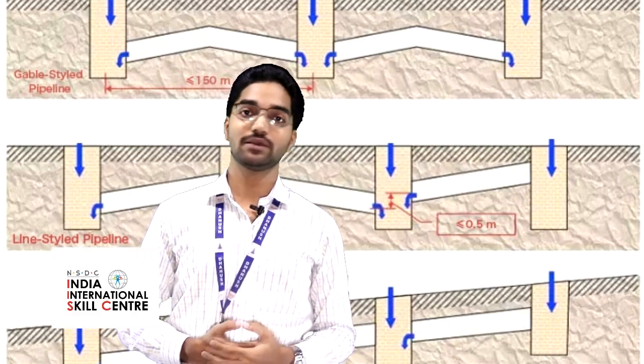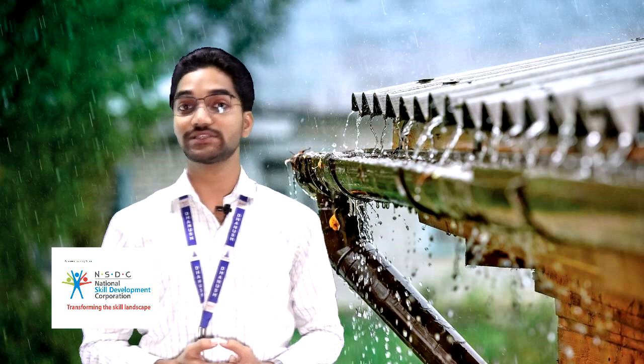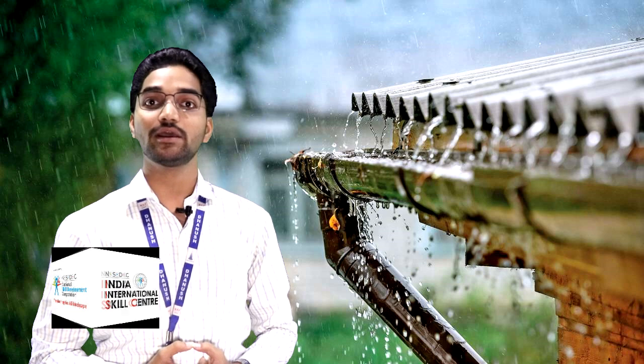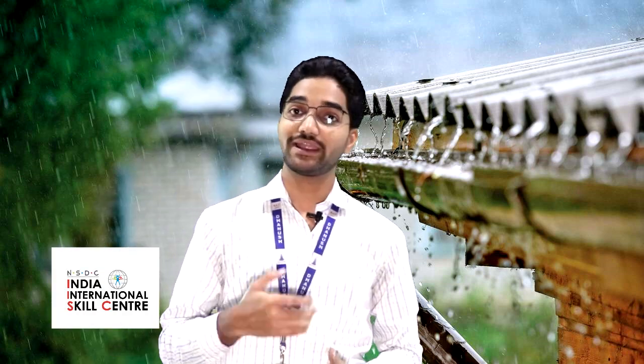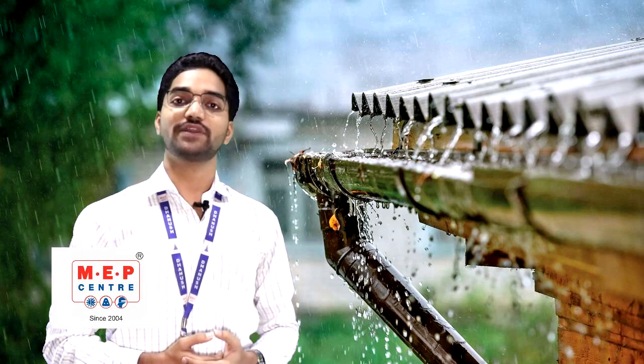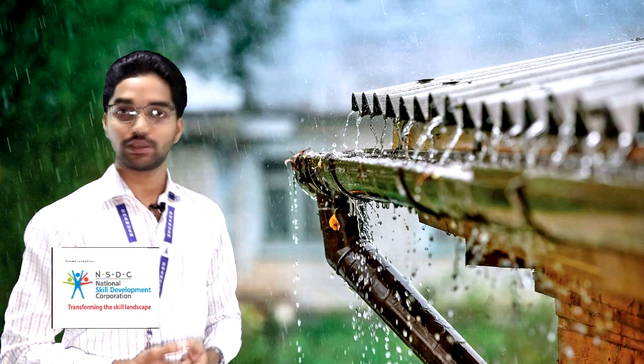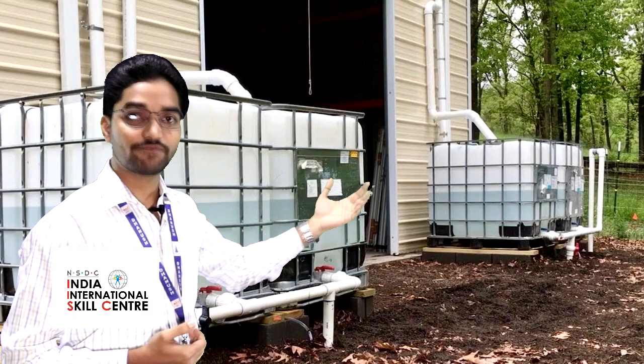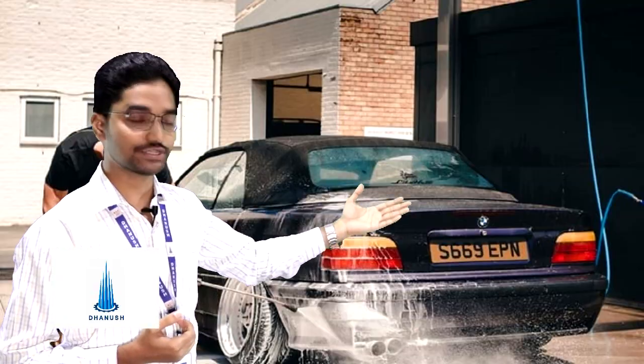The next module is the rainwater system. India is home to around 16% of the world's population but has access to only 4% of consumable water, which can deplete easily due to overpopulation and improper use. The solution is rainwater harvesting. Collected rainwater can be stored in tanks and used for different applications such as gardening, car washing, and HVAC cooling towers.